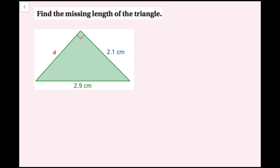For this example, we're going to find the missing length. I see my right angle, and the side length opposite my right angle is going to be the hypotenuse, so this is my hypotenuse. The two sides that make the right angle are my legs. Since I'm dealing with a right triangle and side lengths, I'm going to use the Pythagorean theorem: A squared plus B squared equals C squared. It's always a good idea to write down the Pythagorean theorem in its general form and then plug your values in.